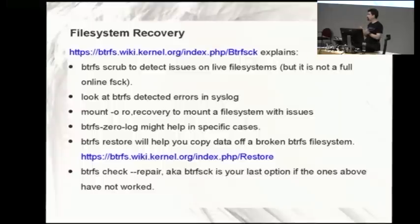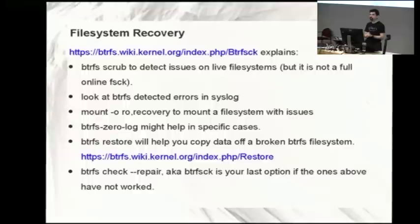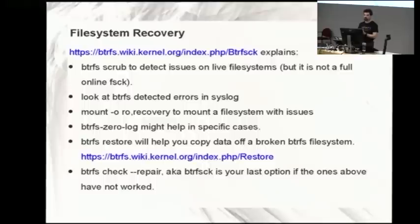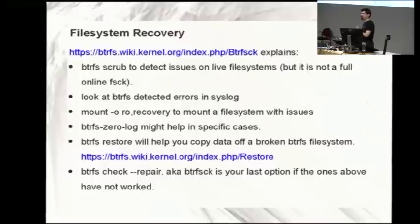It's a logging file system, so if it gets wedged between two states, it will not automatically throw away the new state because maybe there's something in there you want. Zero-log lets you zero the last bits written and go back to the previous state, getting back to a good file system before random data got written. BtrFS restore is a nice tool that mounts a BtrFS disk image, scans for files inside, and even if all structures are missing or things went really bad, it will try to find data and save it somewhere else. Check/repair is the FSCK program - it's not as good as ext4's FSCK, so for critical data try the other recovery means first.